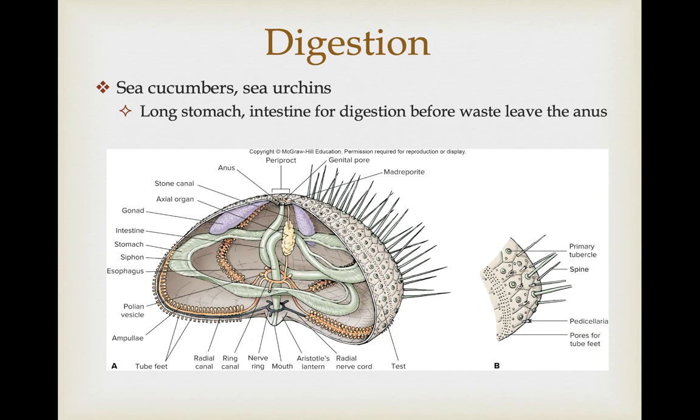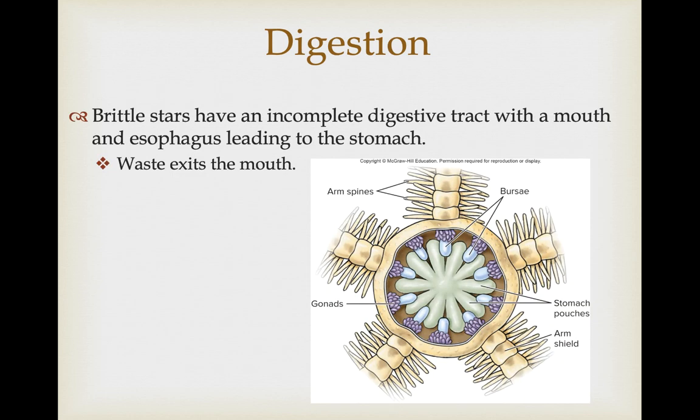Sea cucumbers and sea urchins have a long stomach and intestine for digestion before waste leaves the anus, generally a simpler structure compared to sea stars. Brittle stars, however, have an incomplete digestive tract — they have a mouth with an esophagus leading to a stomach, and waste exits back via the mouth.